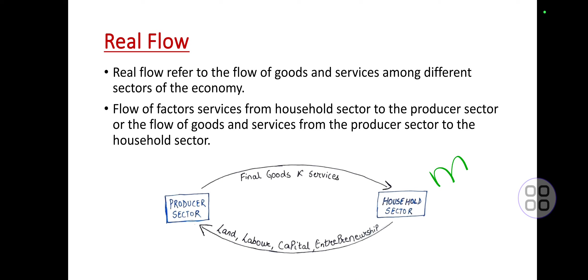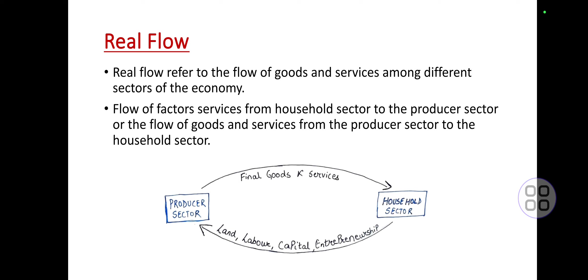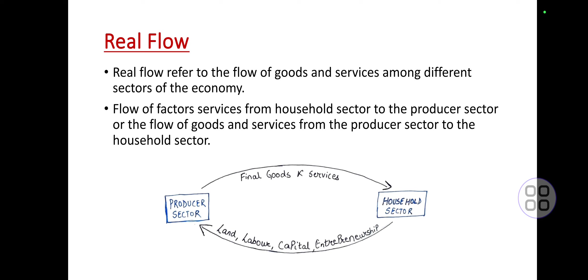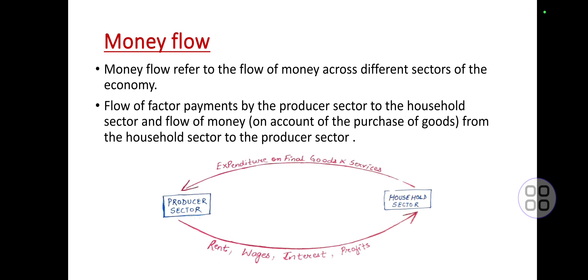Producers provide the final goods and services to the household. In real flow, there is no use of money — no monetary transaction. It is purely a flow of goods and services: households provide factor services to producers, and producers provide goods and services to households.